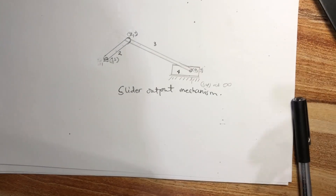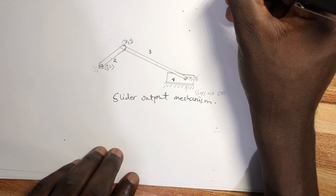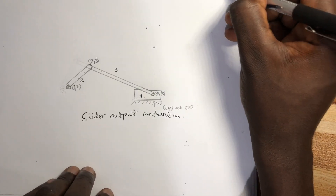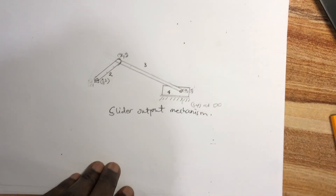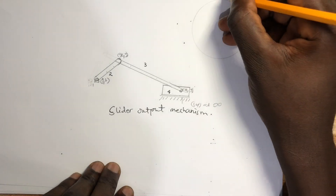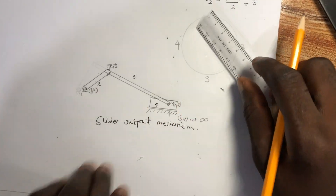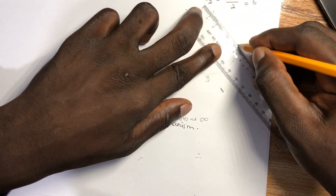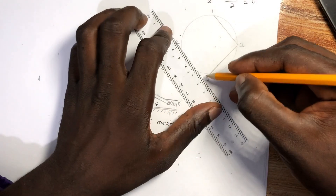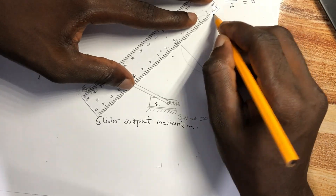First we find the number of instant centers expected, which is the combination C(4,2) = 4×3 / 2 = 6. We use Kennedy's circle: draw the circle, label it 1, 2, 3, 4. We know joint 1,2 so we join 1 and 2. We know joint 2,3 so we join 2 and 3. We know joint 3,4 so we join 3 and 4. And joint 1,4 is at infinity — don't forget that.